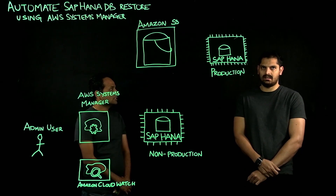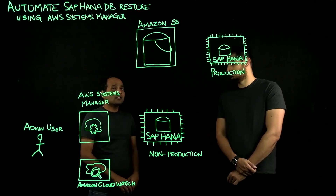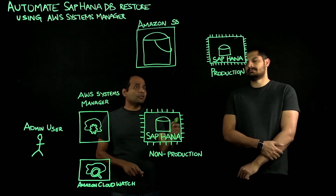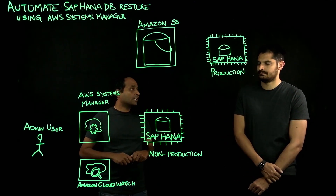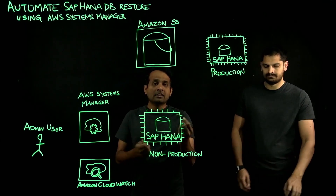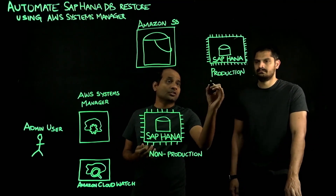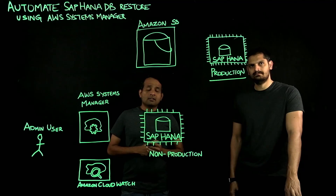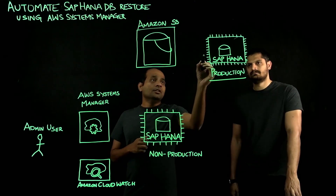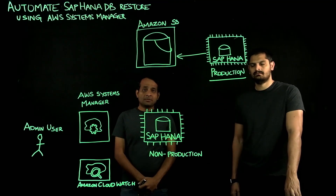Can you deep dive again on what are the benefits of using this process? As I have drawn here, I want to quickly show you how the flow happens and then how customers take benefit of it. Assume that you are running your SAP production system on an Amazon EC2 instance, which I have pre-drawn here. This is your SAP HANA running on an Amazon EC2 instance.